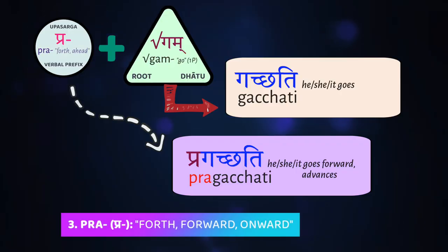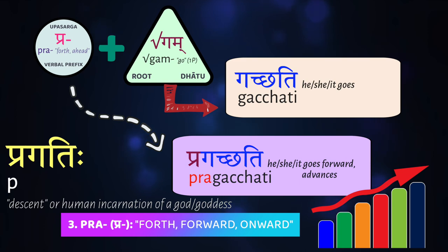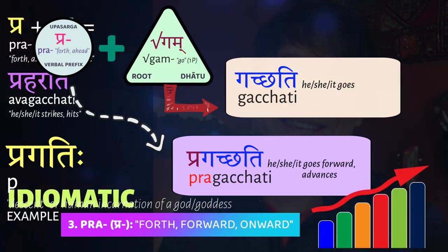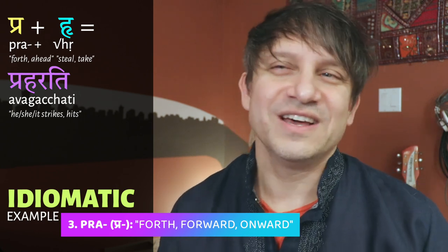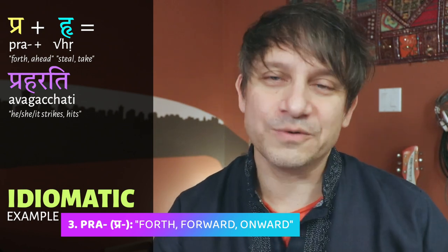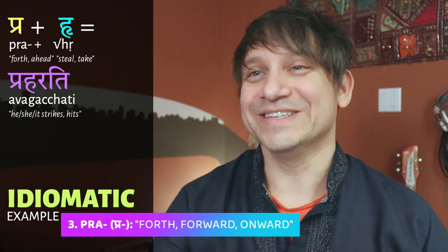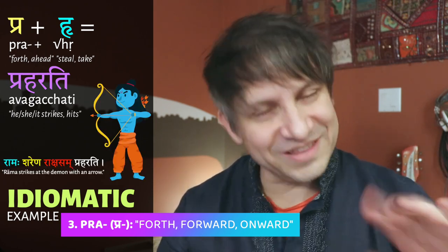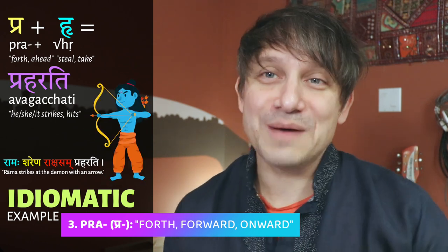The prefix pra has a directional meaning of 'forth, forward, or ahead.' So with the verb gam, 'to go,' pragam means 'to go forth, to progress forward.' Sā pragacchati — 'she progresses, she goes forward.' The word pragati is derived from this verb with prefix, meaning 'progress.' Pra also has pleonastic usage, not often changing the meaning of verbs. Idiomatically, pra before hṛ means 'to strike or hit' — Rāmaḥ praharati means 'Rāma strikes.'